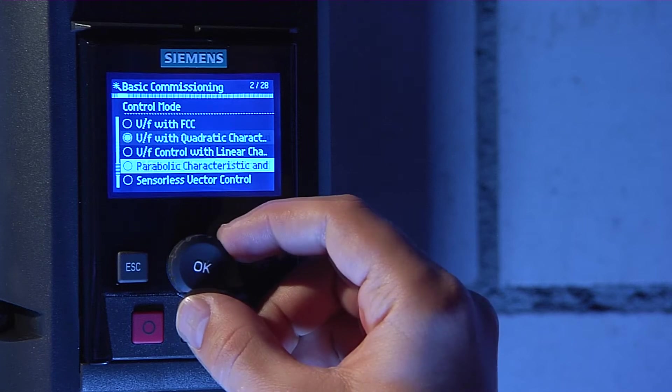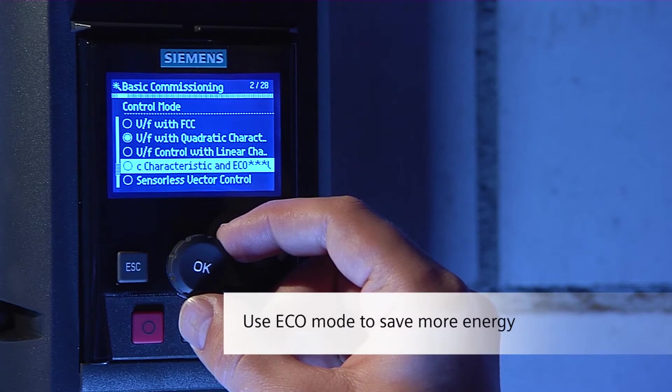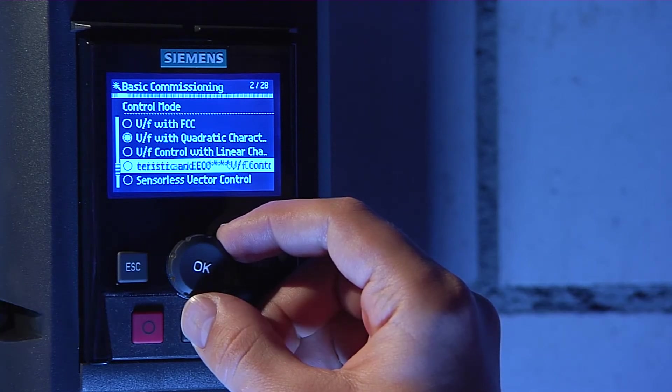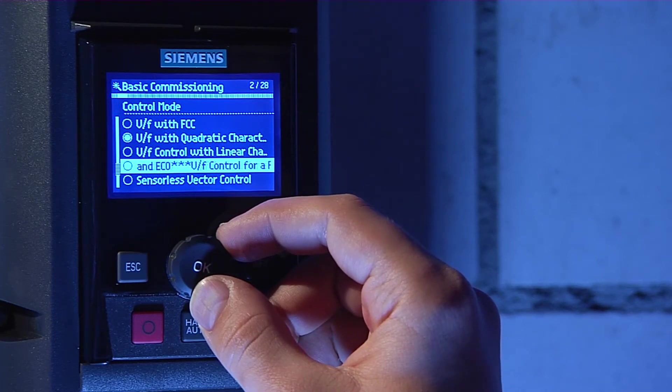Use V2F Parabolic with Eco mode for saving even more energy. In this mode, G120P will reduce the output voltage as much as possible without reducing the speed of the motor. Confirm by pressing OK.